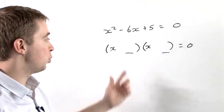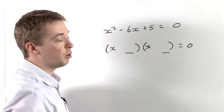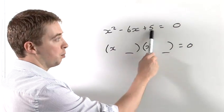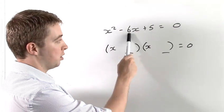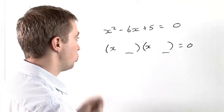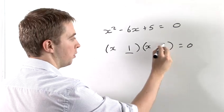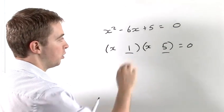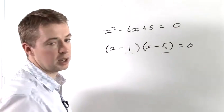So how do we choose which number goes here and here? Well, we want these two numbers to multiply together to give us positive 5, and these two numbers to add together to give us negative 6. Now, the two numbers which do that are 1 and 5. And you'll notice, because this has to be negative, they both have to be negative.